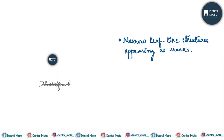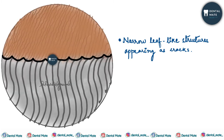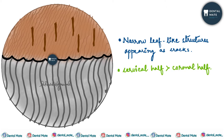So what is enamel lamellae? These are basically narrow leaf-like structures which are seen in the transverse section of enamel and they appear as cracks. The enamel lamellae extend from the enamel surface and they go towards the DEJ. They run transversely so they are seen in the cross section of the tooth, and they are present more in the cervical half of the tooth as compared to the coronal half.